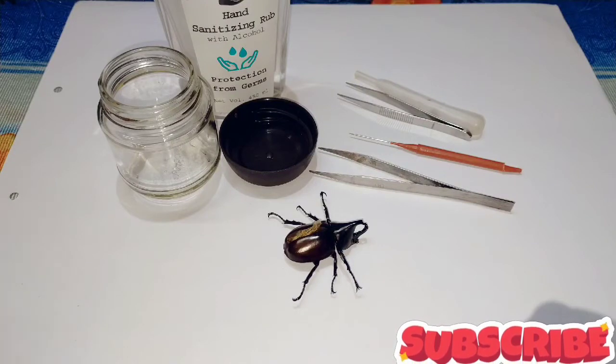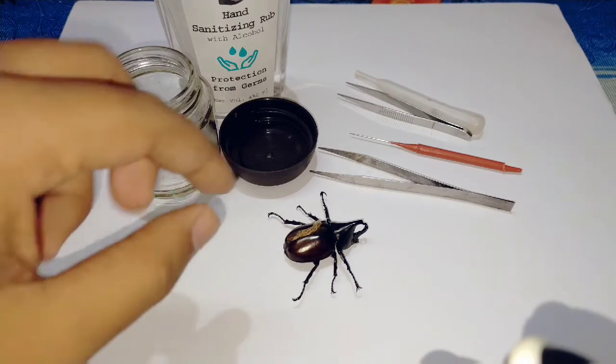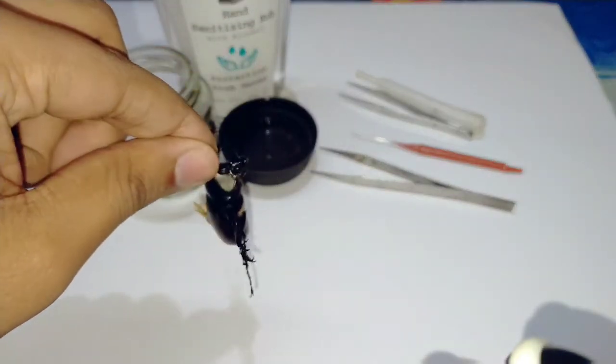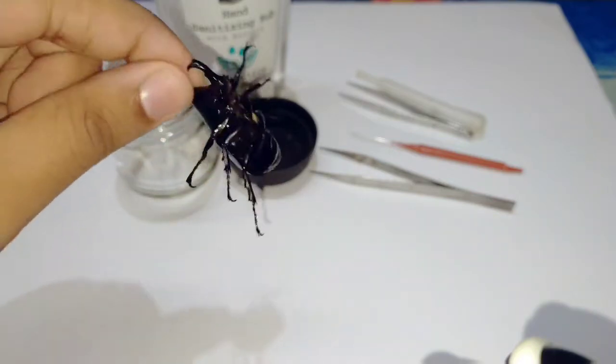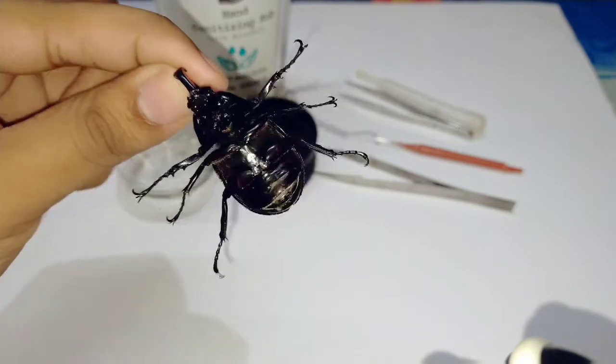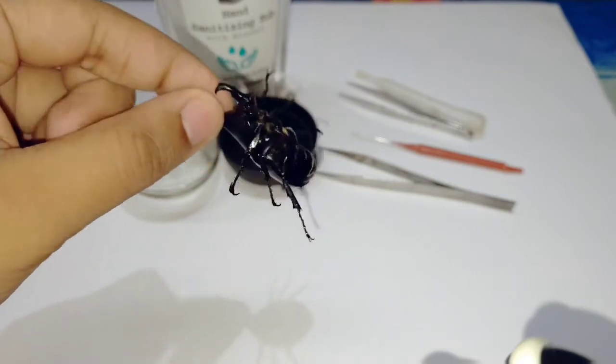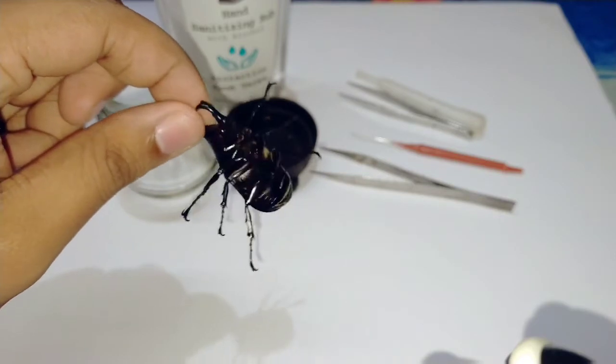Hello everyone, I am Soji Kumar, welcome to my channel. Today's topic is about how to preserve an insect by using hand sanitizer. I have got this rhino beetle in my balcony and I have dried it for one week. So how to preserve it by using hand sanitizer, today I will show you in this video.